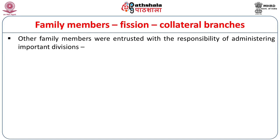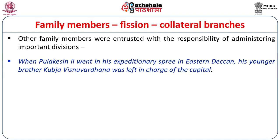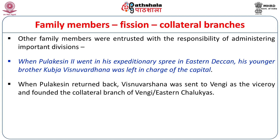Other family members beyond the eldest son were also entrusted with responsibility of administering important divisions. When Pulakeshi II went on his expeditionary tour to the eastern Deccan and later invaded Kanchi, his younger brother Kubja Vishnu Vardhana was left in charge of the capital. When Pulakeshi returned, Kubja Vishnu Vardhana was sent to Vengi as Viceroy and founded the collateral branch of the Eastern Chalukyans, which continued to rule till 1070 — a kind of dynastic fission. Another collateral branch, the Lard Chalukyans, ruled in Gujarat.